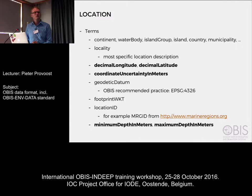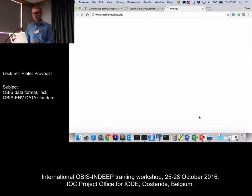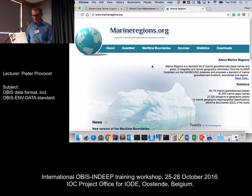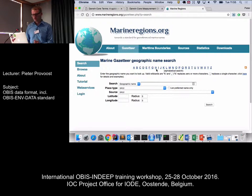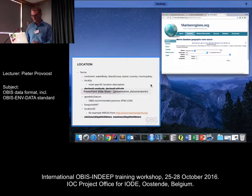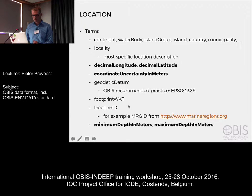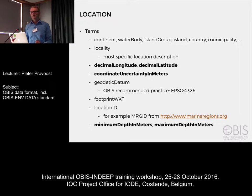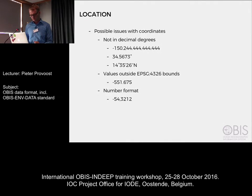There are also fields for putting an identifier for your location. For example you can use the Marine Regions website, which is a catalogue of location names. If you have a location name and want to get coordinates for it, you can look it up there and use the ID from Marine Regions in the location ID field. And of course there's minimum depth and maximum depth in meters. If you have a sample from, say, 20 meters depth, you can put the same value in both fields. We're adding bottom depth ourselves to the records in OBIS, but there's no Darwin Core field for that.